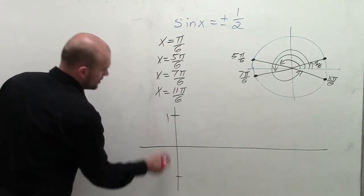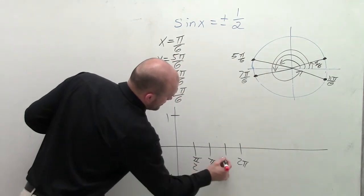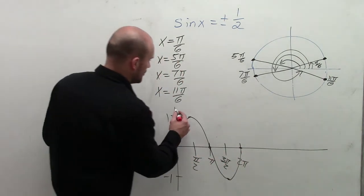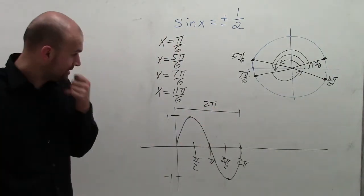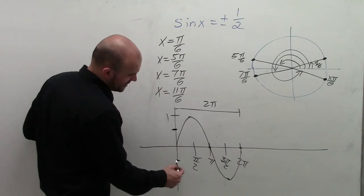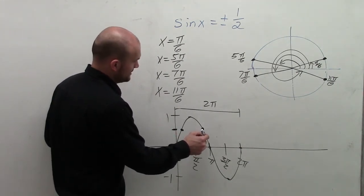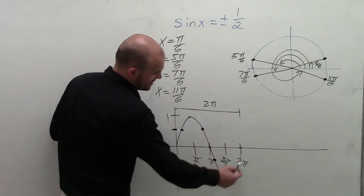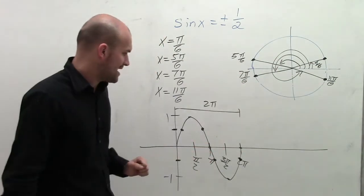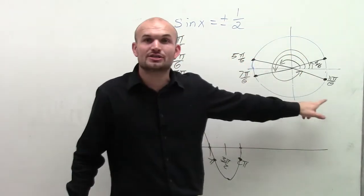Remember, the sine function has an amplitude of 1, so it goes up to 1 and down to −1, and creates one period at 2π. The graph goes up, crosses, goes down, hits −1, and comes back up. That's our initial period with distance 2π. We want to find when sine equals plus or minus 1/2: 1/2 occurs at π/6 and 5π/6, and −1/2 occurs at 7π/6 and 11π/6 — matching what we see from the unit circle on the xy-axis.